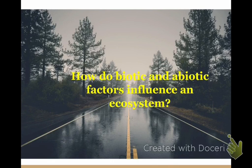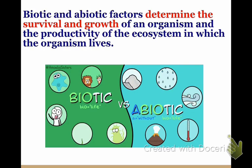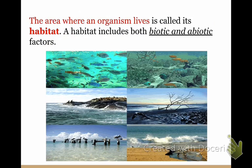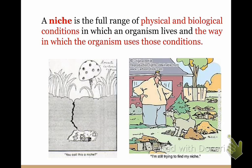So how do biotic and abiotic factors influence an ecosystem? These factors determine the survival and the growth of an organism and the productivity of the ecosystem in which the organism lives. The area where an organism lives is called its habitat, and a habitat includes both the biotic and abiotic factors.